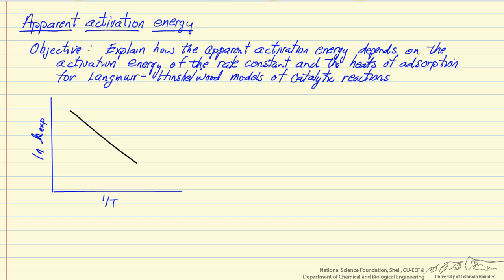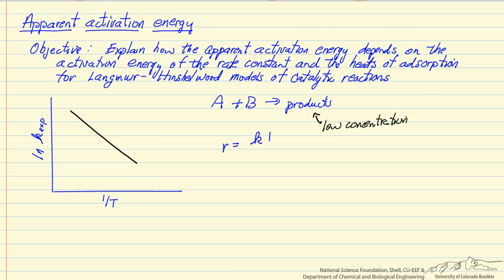Let's look at a simple example in which A plus B is reacting to products. We're going to assume that the product concentration is at a low concentration, just to simplify the calculations. For a Langmuir-Hinshelwood mechanism, the rate is proportional to a rate constant times the adsorption equilibrium constants for A and B, the pressure of A and pressure of B, with a denominator containing adsorption equilibrium constants for A and B and the pressures of A and B squared.